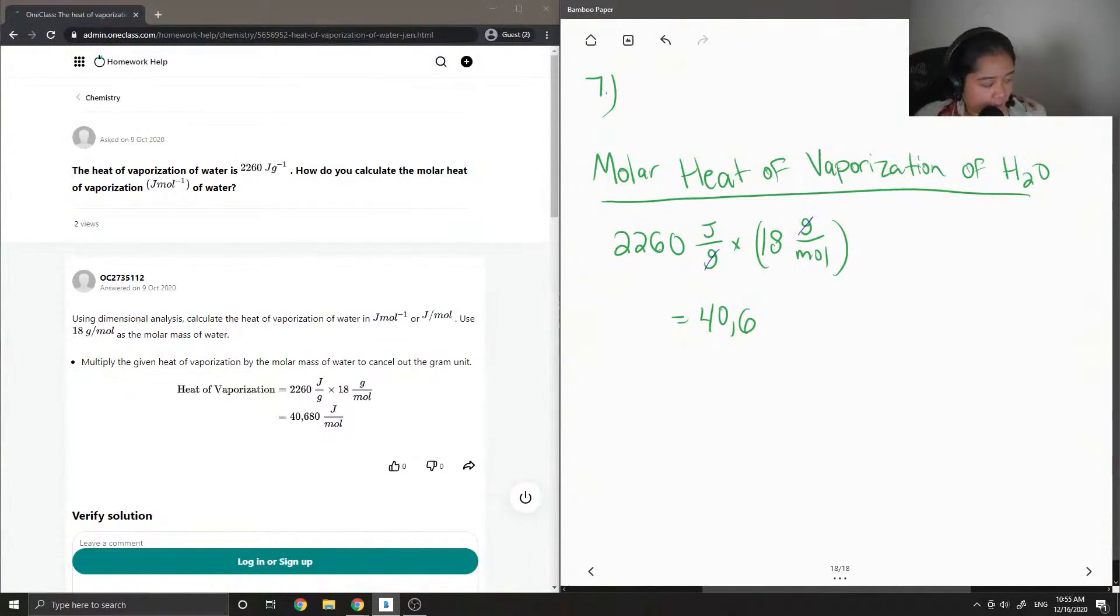And it is 40,680 joules per mole. And we can calculate this to kilojoules per mole just by dividing by a thousand. You get 40.68 kilojoules per mole.